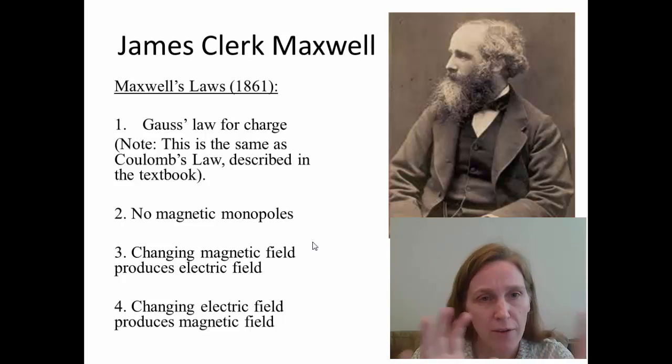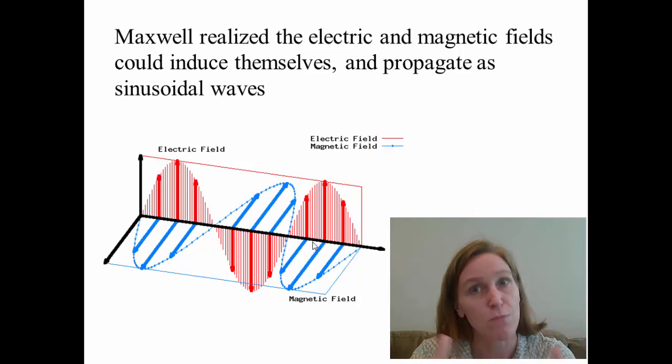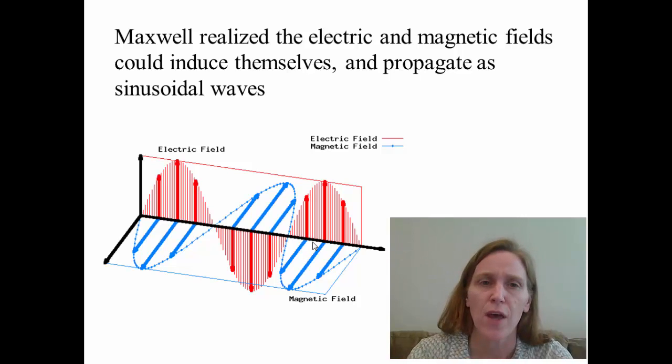So as I said, he's sort of codifying all of the things that people had been figuring out over the previous few decades. But while he's doing this, he notices something. He realized that if a changing electric field produces a magnetic field, and a changing magnetic field produces an electric field, then what you could have happen is a situation in which they're continually inducing one another.